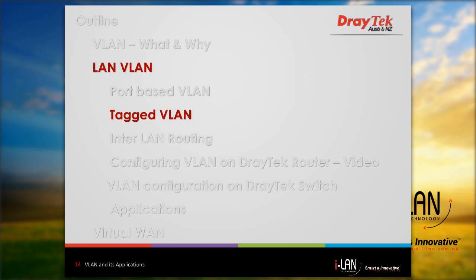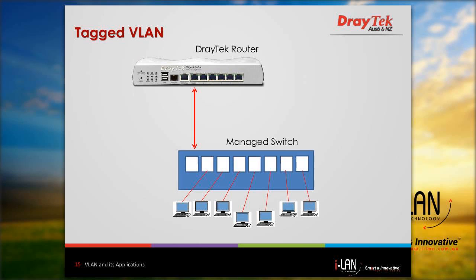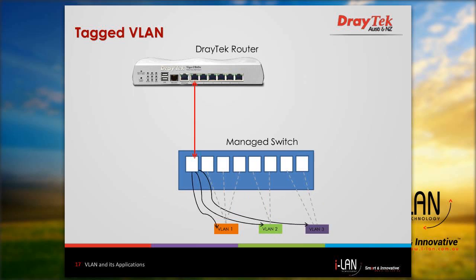Now let's look at tagged VLAN. Consider we have seven PCs connected to a switch and the switch is connected to a router. We have three different VLANs configured on the switch based on department. In normal port-based VLAN, we need three different connections from the router to the switch to pass traffic for each VLAN — one cable each for the orange, green, and blue VLANs. But in the case of tag-based VLAN, you can use only one port, so all data passes through the same cable and the switch separates out packets based on the tag on the data packet.